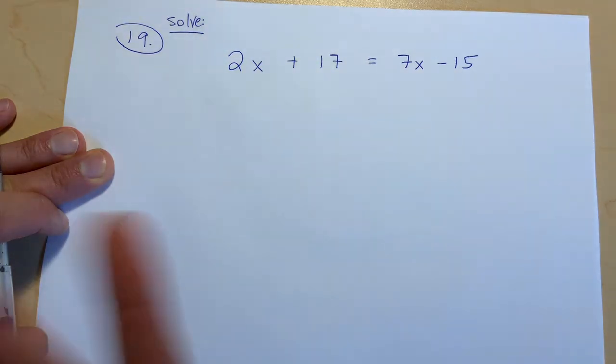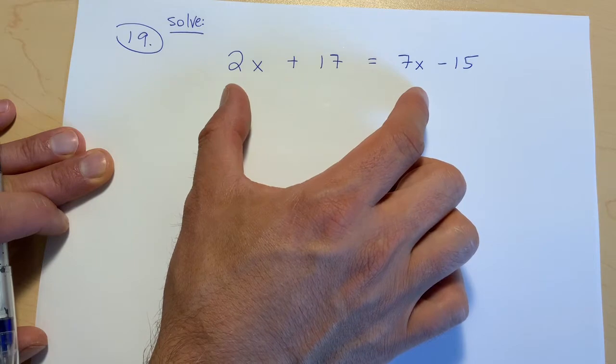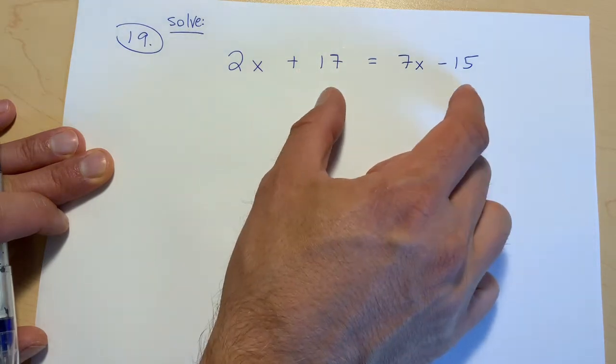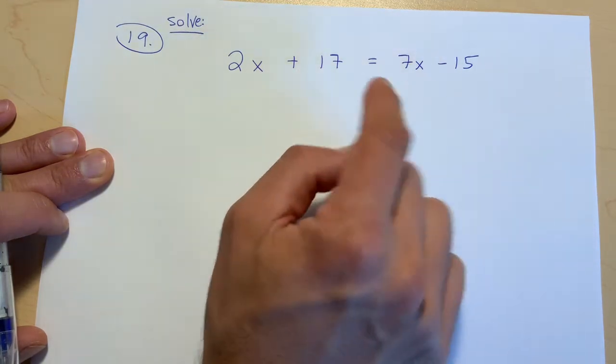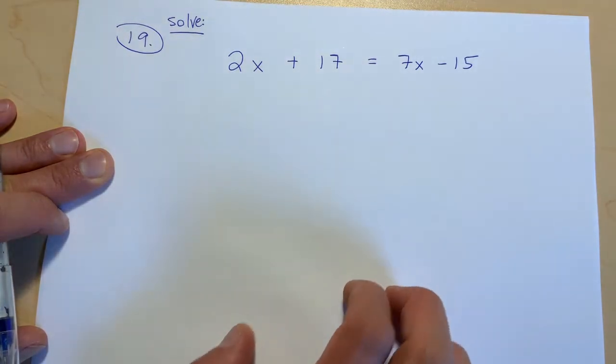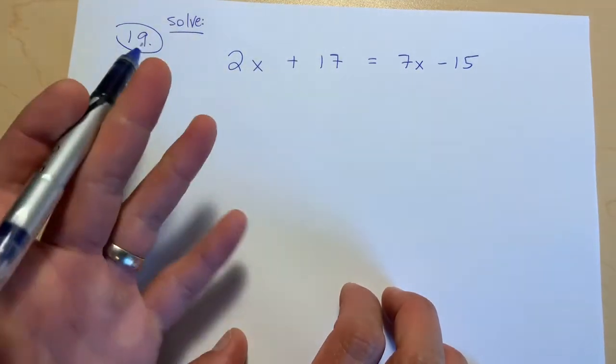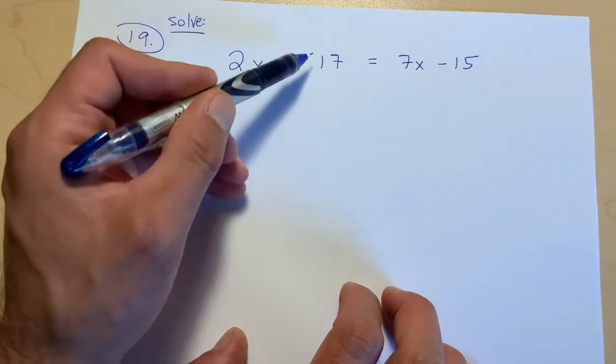So what we're going to try and do is collect like terms, so group the x's together and then we'll group those numbers together. And the equal sign is going to sort of just make things be a little bit different for us. So for one thing, I think we just need to organize this, right? Like we want to keep all the numbers together and we'd like to keep all the x's together.